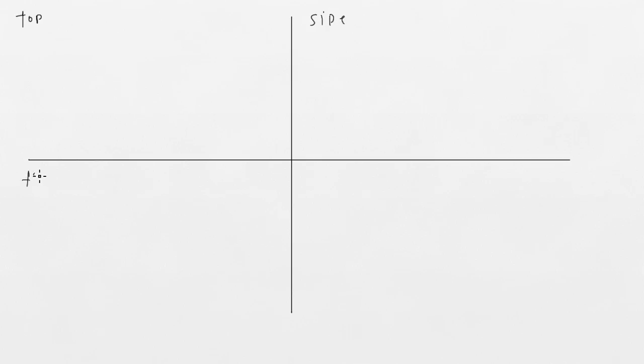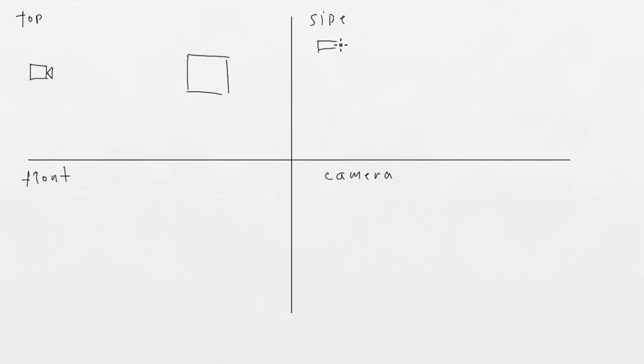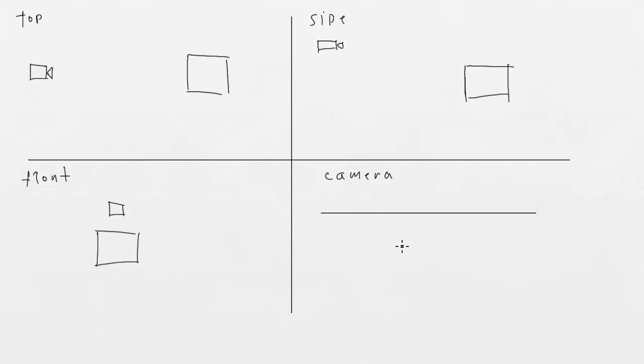Let's recap rectilinear perspective with a hand-drawn 3D simulation. Imagine a 3D software interface which has top, side, front, and camera view. Let's draw a simple camera in the scene. From the top view, this is the box and this is our camera. From the front view, this is the box and this is the camera. And in the perspective camera view we would see something like this.